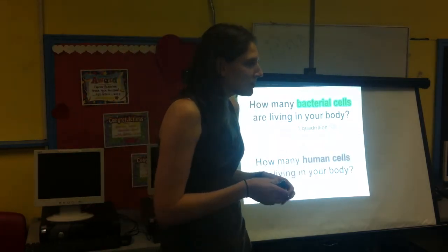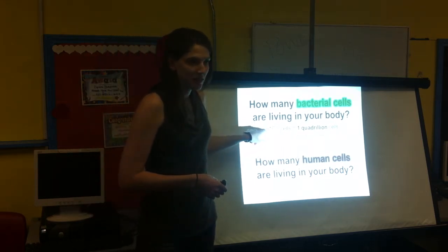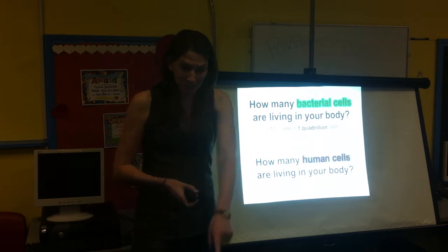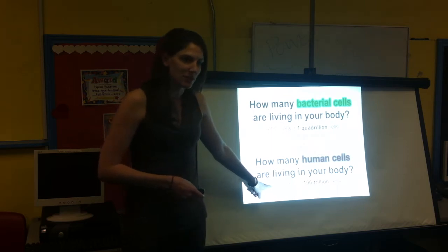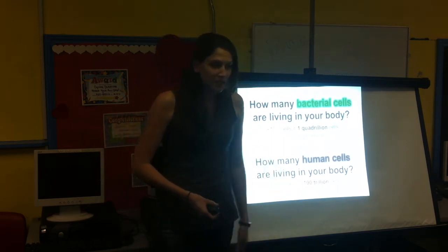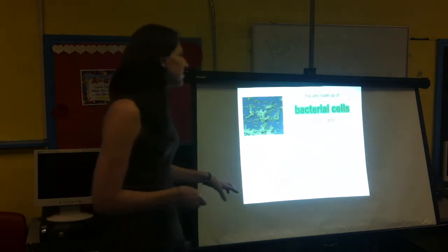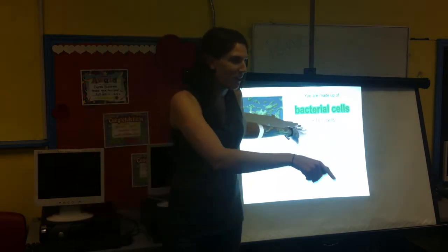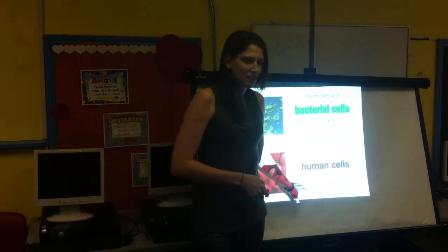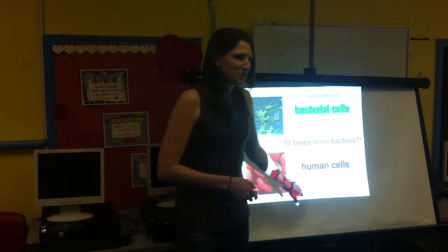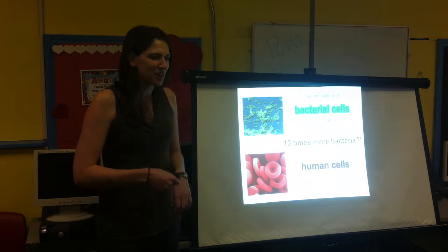What about how many human cells are living in your body? Do you think it's more or less than one quadrillion? Some people say more, some people say less. So there are actually 10 to the 14th — that's 100 trillion human cells in your body. So you right now are made up of 10 to the 15th cells of bacteria and 10 to the 14th human cells. You are made up of 10 times more bacteria than your own human cells.